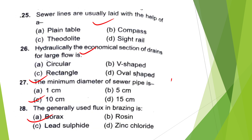25th question: Sewer lines are usually laid with the help of — Plane table, Compass, Theodolite, or Side rail? The answer is option D — Side rail.